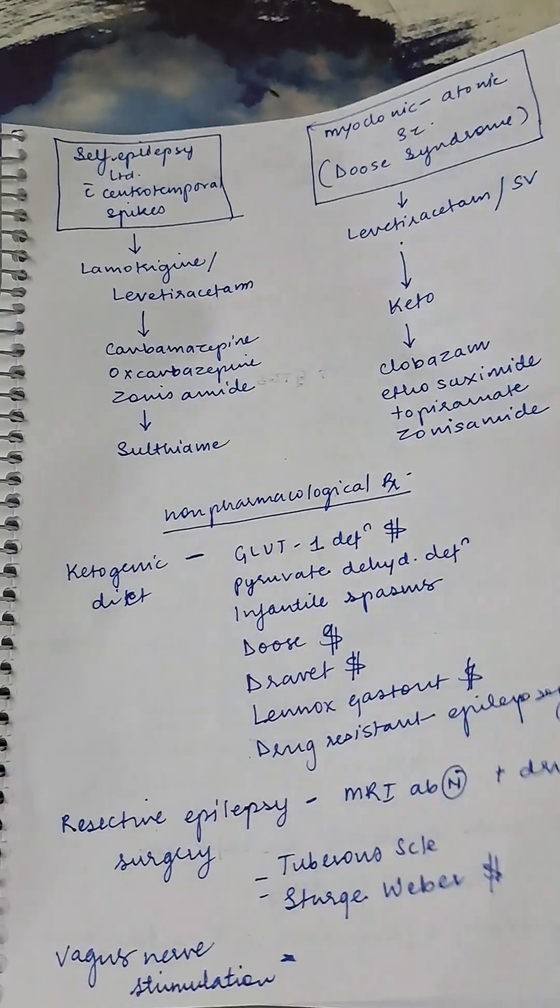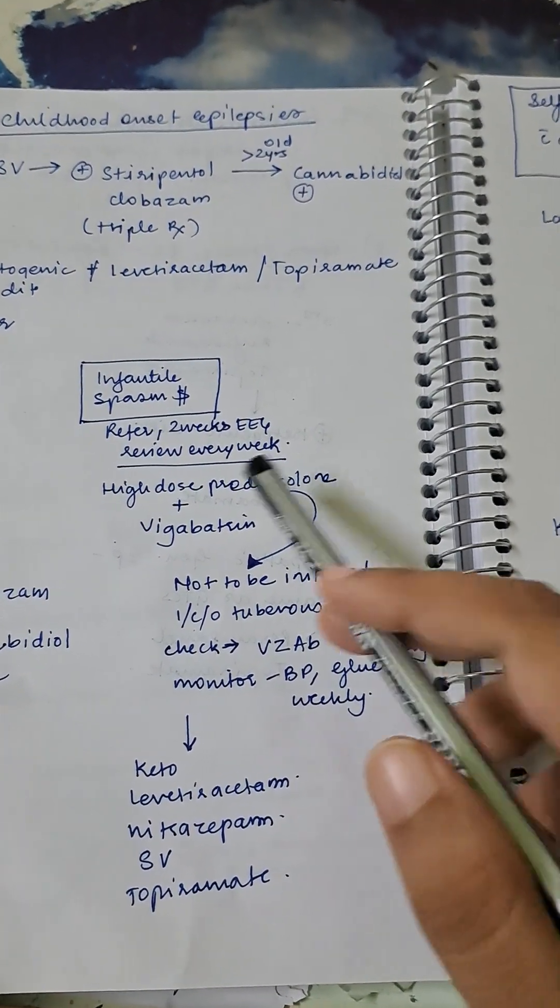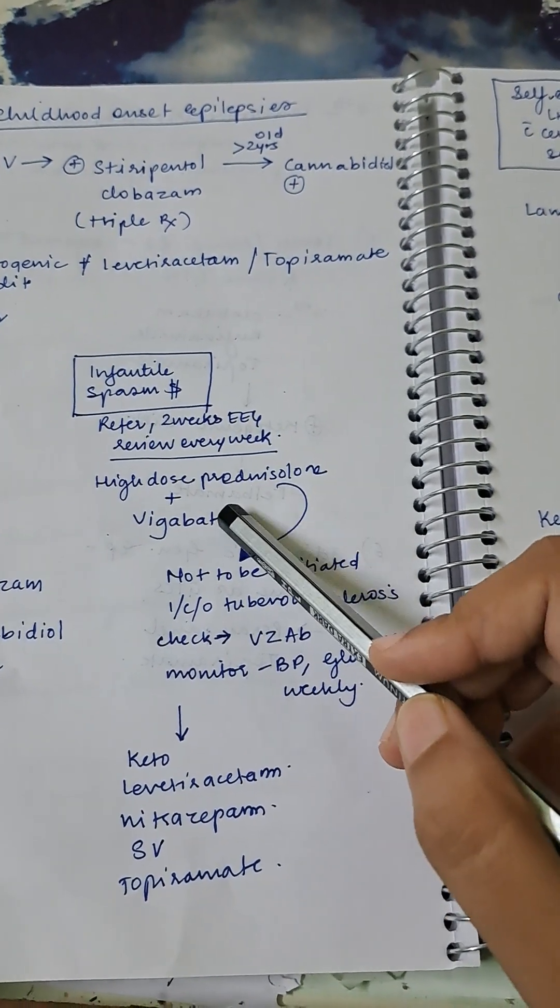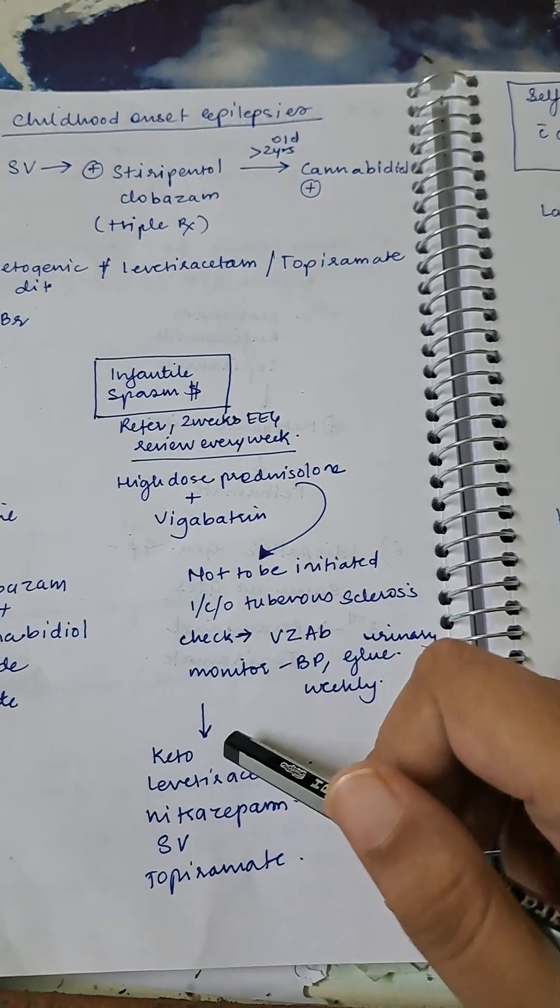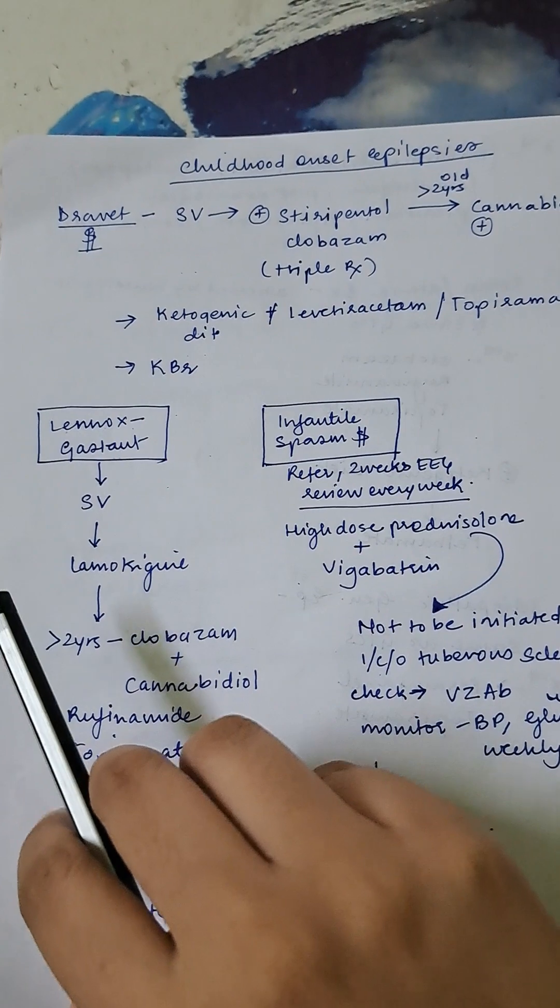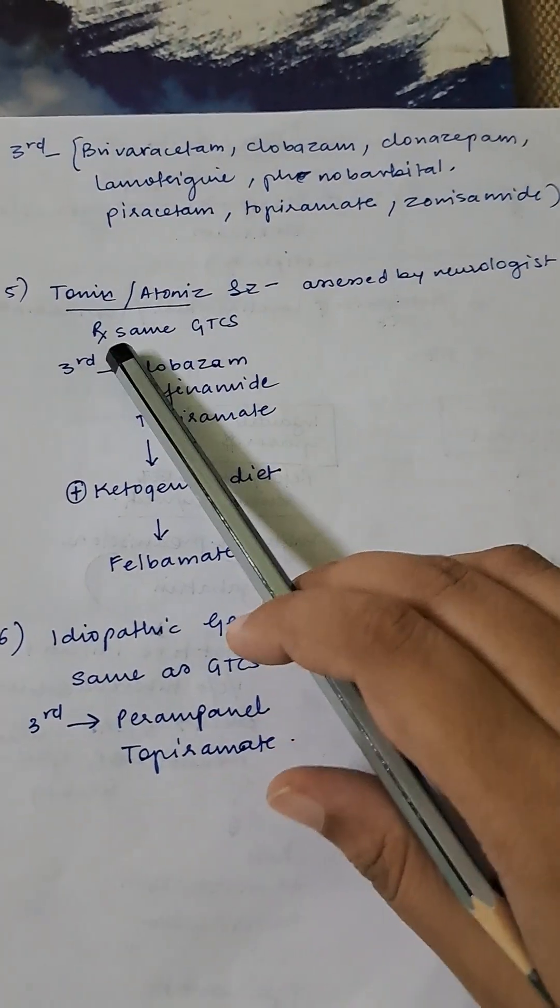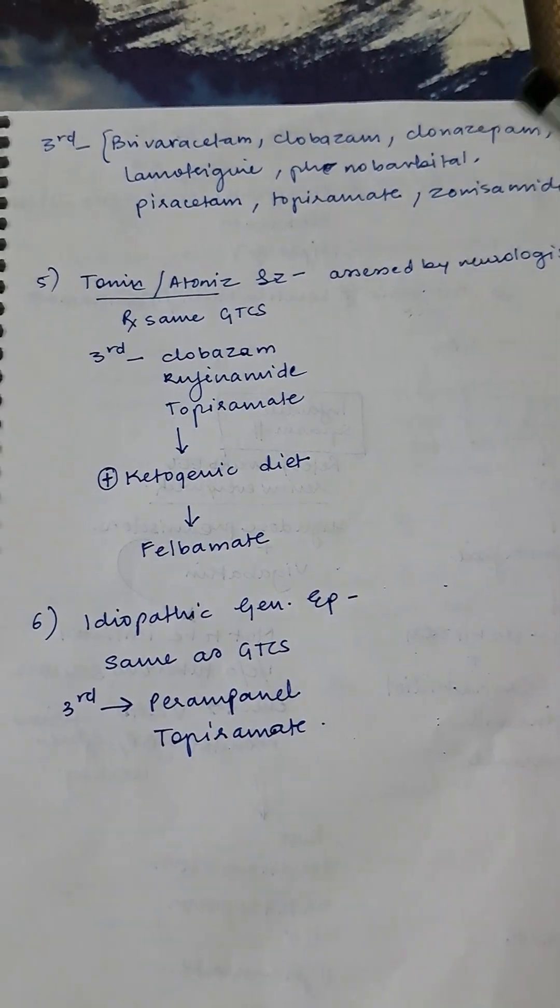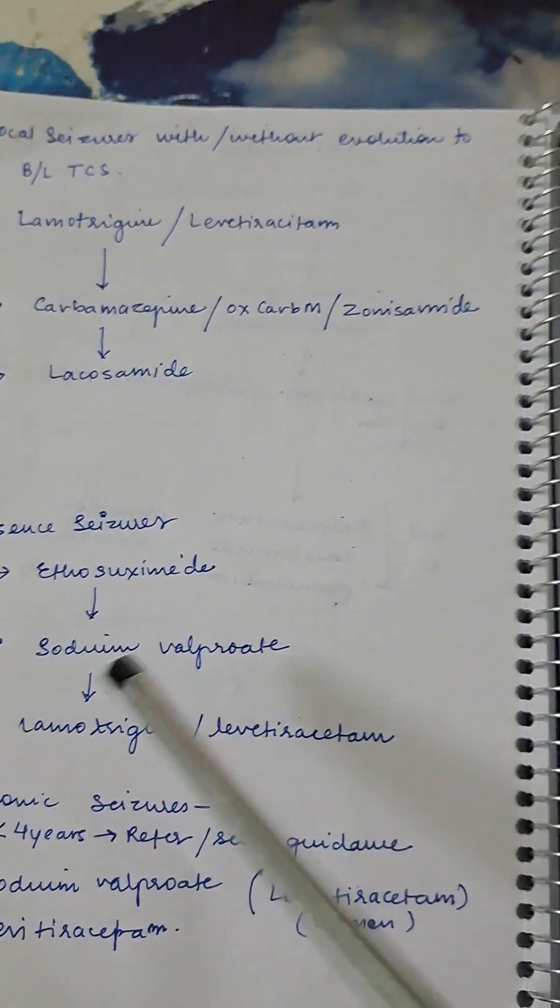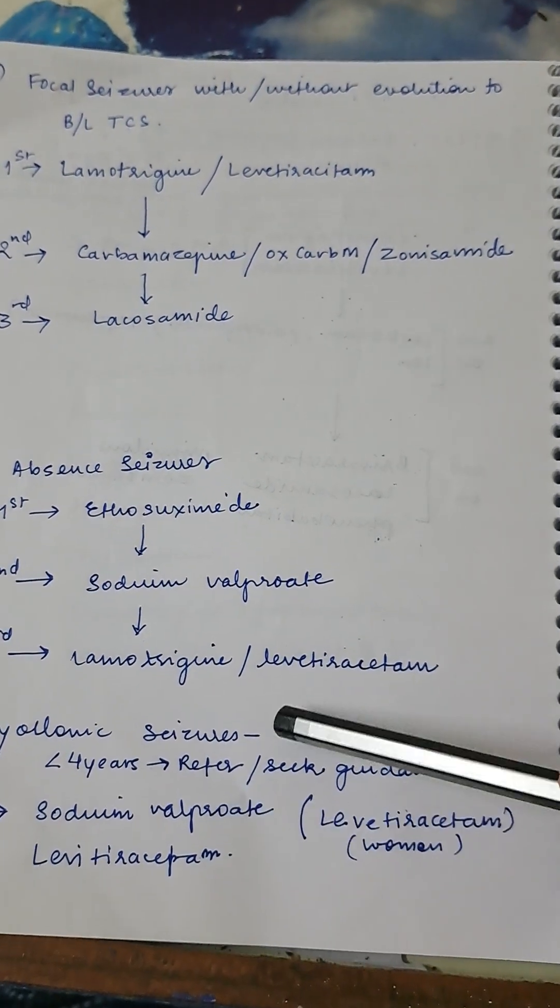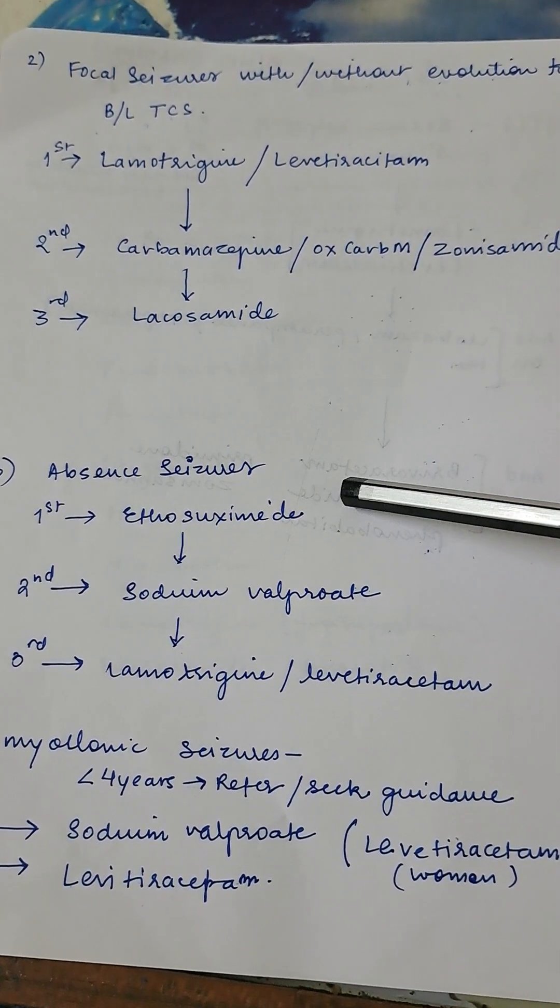Now the most important drugs out of all these are for infantile spasm and tuberous sclerosis. In this case you will start with vigabatrin. If it does not work, then you will add high-dose prednisolone for tuberous sclerosis and then go on to ketogenic diet. Lennox-Gastaut: you will start with sodium valproate. Important ones: tonic-atonic seizure, idiopathic generalized epilepsies, myoclonic seizures, and generalized—all these have treatment lines similar to GTCS.